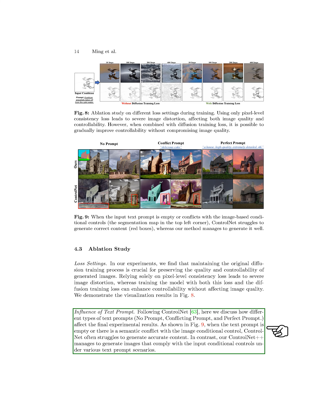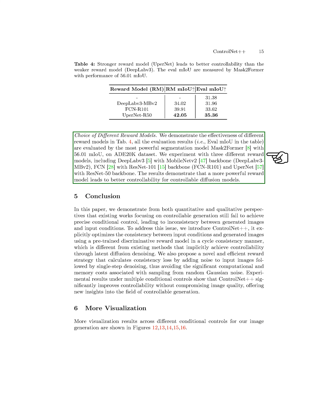Additionally, we explored the impact of different text prompts on image generation performance, showing that ControlNet++ can generate accurate images under various text prompt scenarios compared to ControlNet. Furthermore, we investigated the effectiveness of different reward models on controllability, and our results demonstrated that using a more powerful reward model leads to better controllability for controllable models.